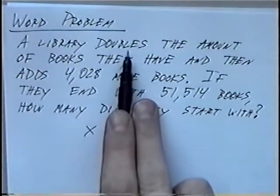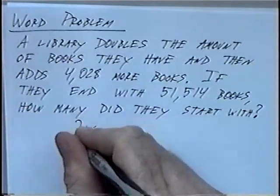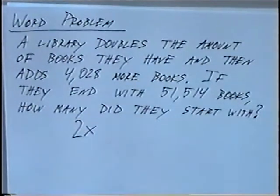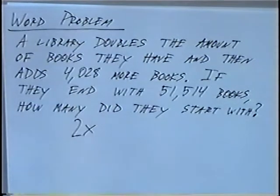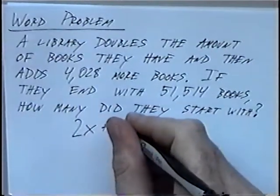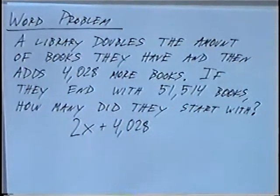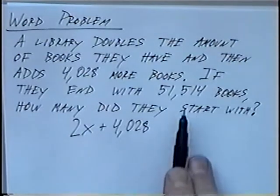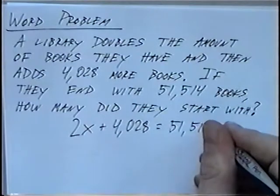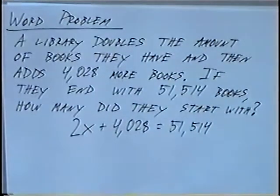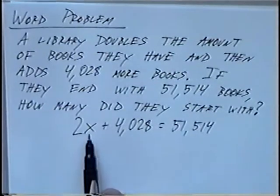At the beginning, they took the amount of books x and they doubled the amount of books. If we double x, that would be 2x or 2 times x. After they doubled the book, they added 4,028 more books. So to this we can add 4,028. Once they had that, they had a total or equals 51,514. So taking the word problem, we can write an equation using a variable like x.